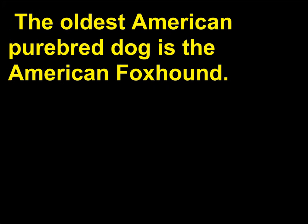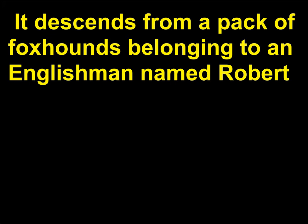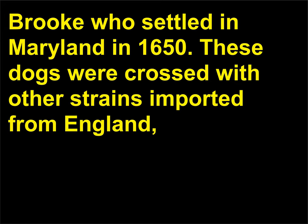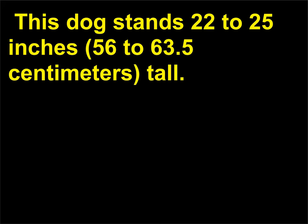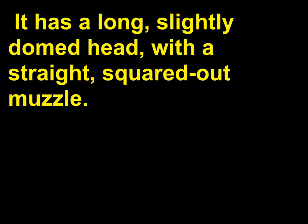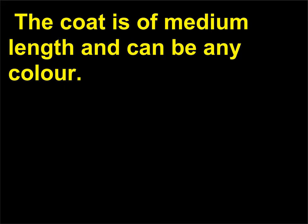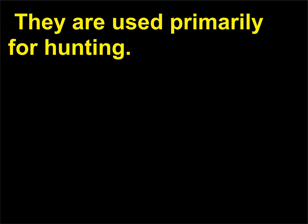The oldest American purebred dog is the American foxhound. It descends from a pack of foxhounds belonging to an Englishman named Robert Brooke, who settled in Maryland in 1650. These dogs were crossed with other strains imported from England, Ireland, and France to develop the American foxhound. This dog stands 22 to 25 inches (56 to 63.5 centimeters) tall, has a long, slightly domed head with a straight, squared-out muzzle, and a coat of medium length that can be any color. They are used primarily for hunting.